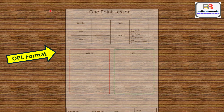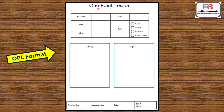Now let us see how the OPL format should be. One Point Lesson format includes: location, topic, area, line, and type — which means basic, safety, problem, or improvement. Then a wrong photograph and a right photograph. Then who has created it — created by, approved by, and date. Then OPL number and revision number.